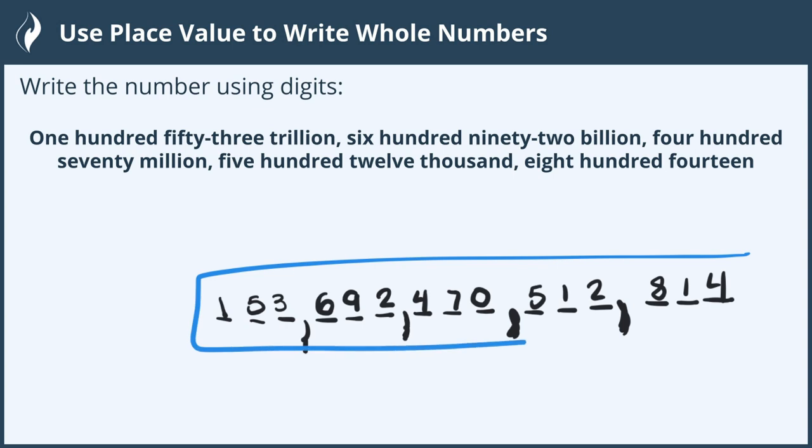We did it, this big long number we've written out with all of our English words into our digit. Our number of 153,692,470,512,814.